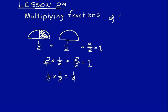Let's do some more practice on these. Let's try one third times one fifth. All we would do here is multiply the numerators together: one times one is one. Three times five is fifteen, so our answer is one fifteenth.